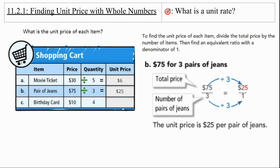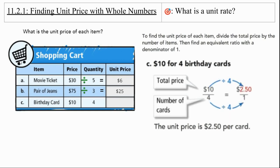Notice in my table how I'm showing what we're dividing by what to get the unit price. Then on the last one, we have $10 for four birthday cards. We make that into a ratio, divide both terms of our ratio by four, and then that's going to equal the price per card, which is going to be $2.50.